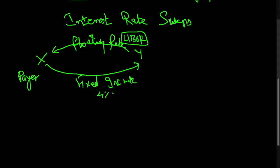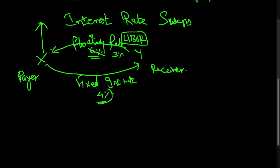X is called the payer because he pays the fixed rate; Y is called the receiver because Y receives the fixed rate. In a three-year contract, if the fixed rate is 4% and the floating rate rises to 6%, X gains because he pays only 4% but receives 6%. Conversely, if the floating rate falls to 3%, X pays 4% and receives only 3%, losing 1% — which Y gains. X benefits when rates rise; Y benefits when rates fall.